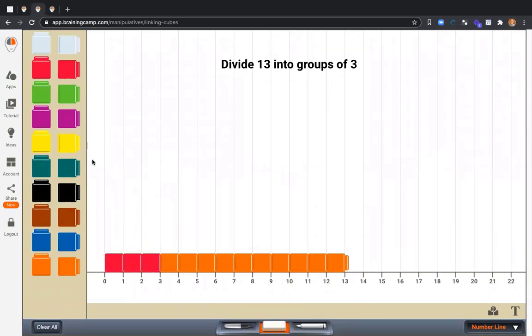So there's 3, 6, 9, 12. I have 1 group of 3, 2 groups of 3, 3 groups of 3, and 4 groups of 3. I cannot make another group of 3 out of this 1 left over. So 13 divided by 3 is 4 with a remainder or a leftover of 1.